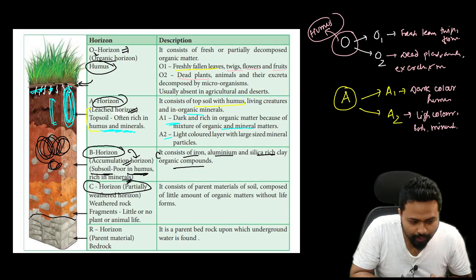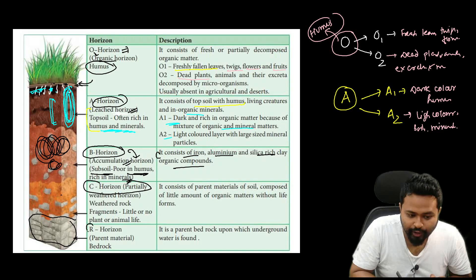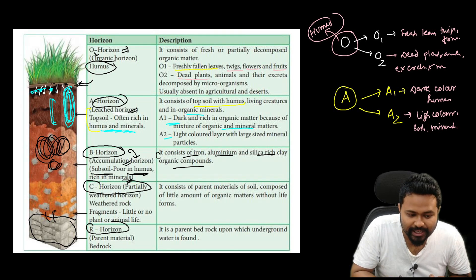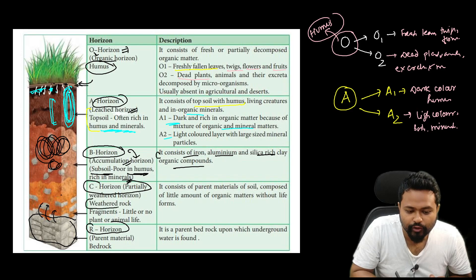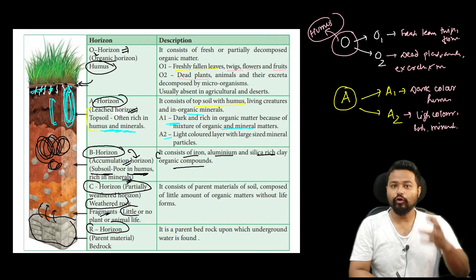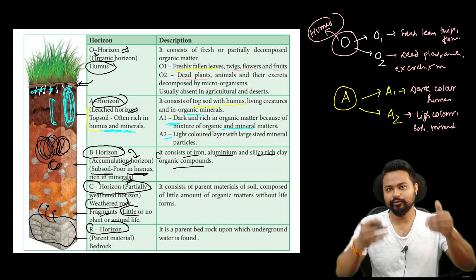The C horizon contains rock fragments. The R horizon is the rock bed — bedrock. The C horizon is the least weathered horizon and rock fragments are available.